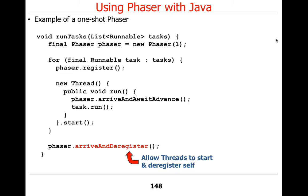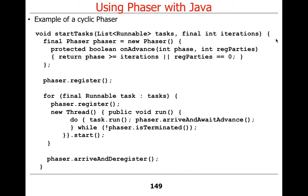So the phaser count starts at one, the number of registered parties is one. For everybody in the task list, they all add themselves. If a thread adds itself and starts to run, it cannot run because the main thread hasn't deregistered yet. When the main thread deregisters and the last thread arrives, then everyone can start.